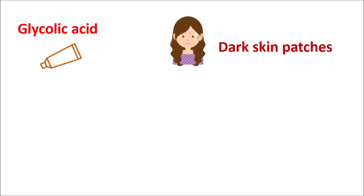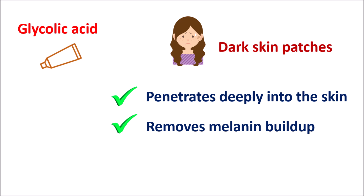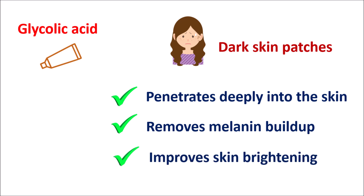Glycolic acid can be used for the treatment of dark skin patches. Being a small alpha hydroxy acid, it can penetrate deeply into the skin, entering dermal cells where pigmentation has accumulated. It removes the melanin buildup in the deeper layers of the skin, reducing skin darkness, and can even improve skin brightening, reducing dark patches on the skin.